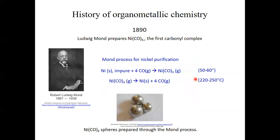Another important step was the discovery of the first carbonyl by Ludwig Mond. The first carbonyl discovered was nickel tetracarbonyl, NiCO₄, a tetrahedral volatile molecule. This carbonyl forms very easily from nickel metal and carbon monoxide near room temperature. This reaction is selective for nickel and can be used for the purification of nickel. Ludwig Mond developed a process named after him — the Mond process — which is still used today to purify nickel via nickel tetracarbonyl as an intermediate.